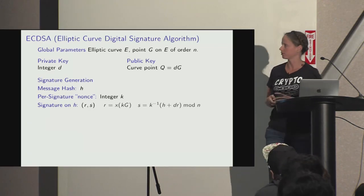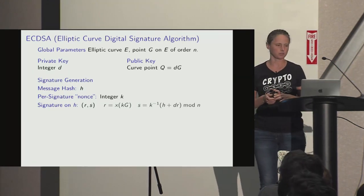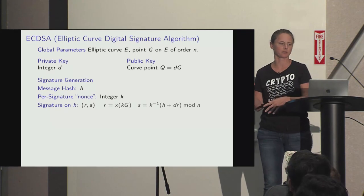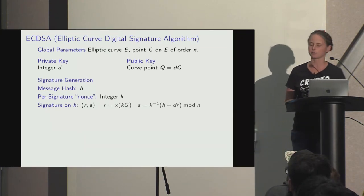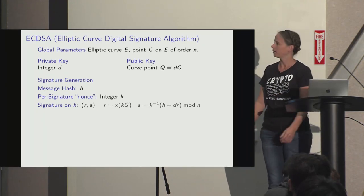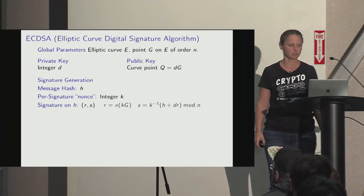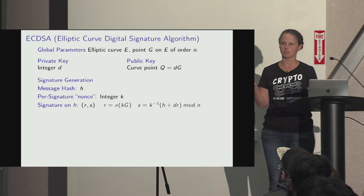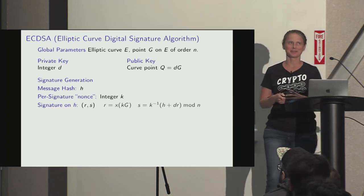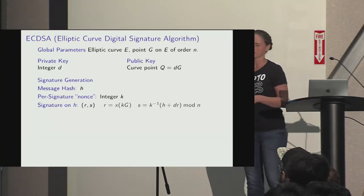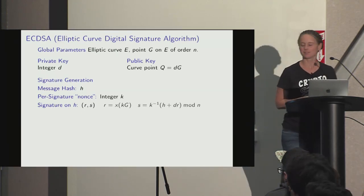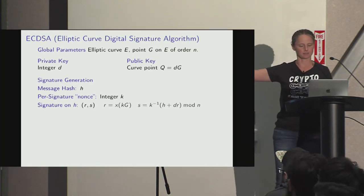We don't care about the elliptic curve aspect at all — just the DSA aspect. For ECDSA, we have global parameters: an elliptic curve E, a generator point of order N, a private key as some integer, and a public key as that integer times the generator point. To sign a message, you hash it — did you know most ECDSA implementations hash the message twice? We treat the message hash as an integer H.